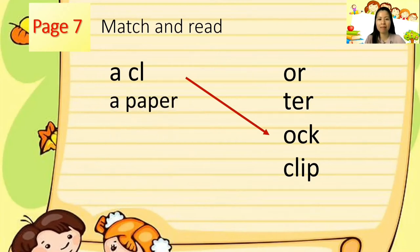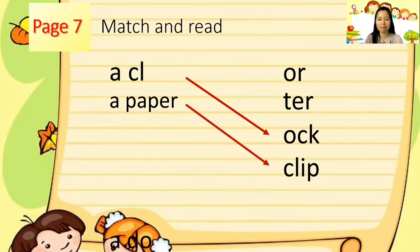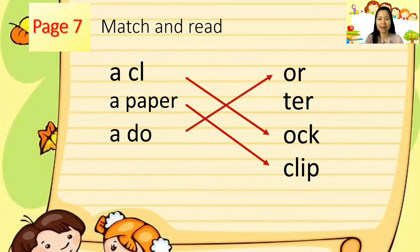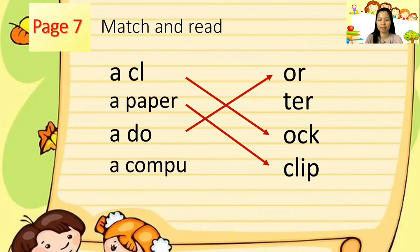Next, a paper — what could be the next letters or word that we can put together with 'a paper'? You're right: a paper clip. It's the word 'clip.' Next is 'a do' — what could be the letters that we have to put to make it complete? Correct. We need O-R to make 'door.' A door. And 'a compute' — what could be the missing letters to complete the word 'computer'? That is correct. We need T-E-R. And now we have a computer.